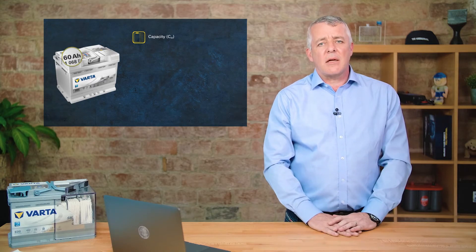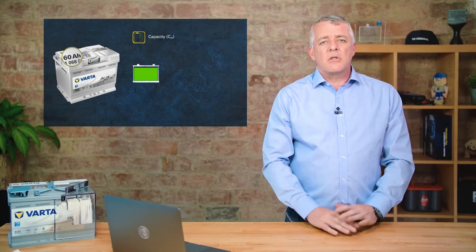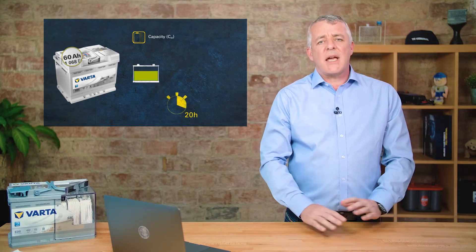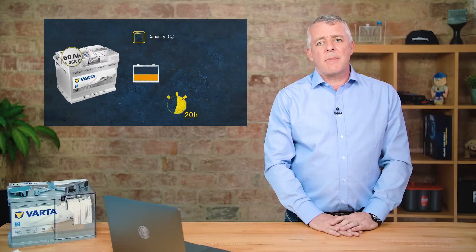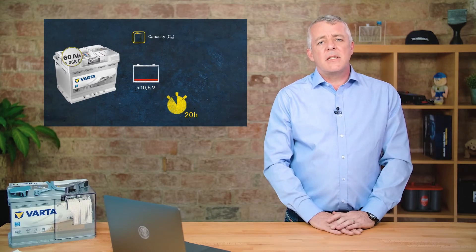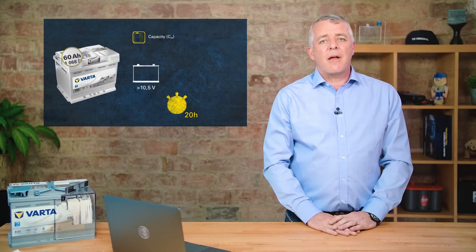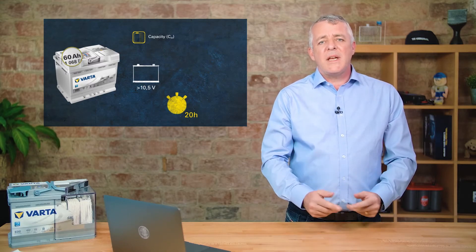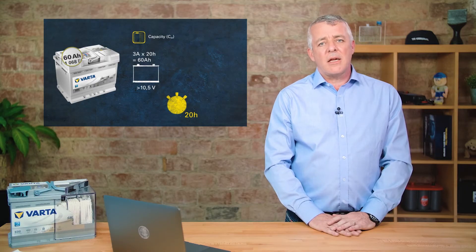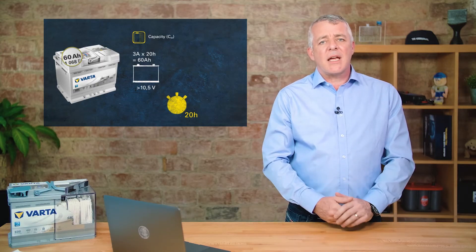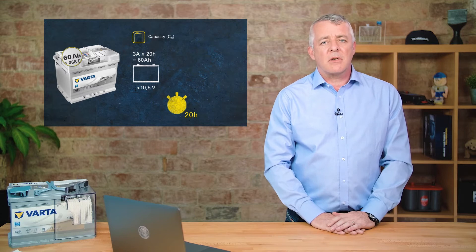So how do they test that according to EN? The test is carried out over 20 hours and a load is put on the battery, and the battery must be above 10.5 volts. To get that result for a 60 amp hour battery, we need to put a 3 amp drain on it. So 3 amps over 20 hours equals a 60 amp hour battery.